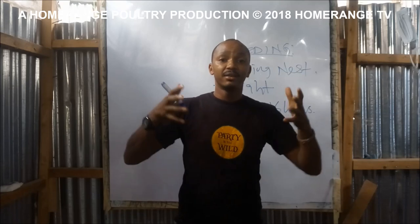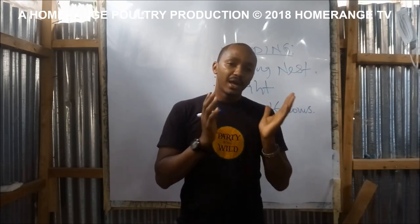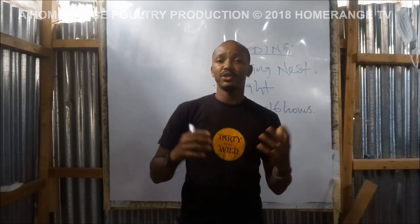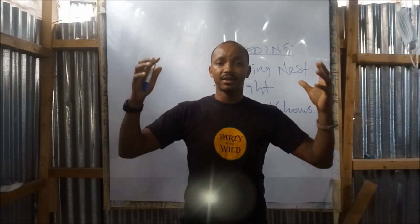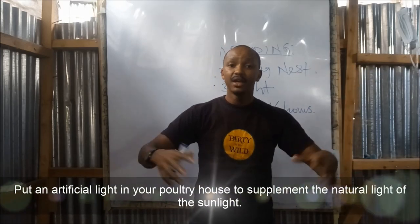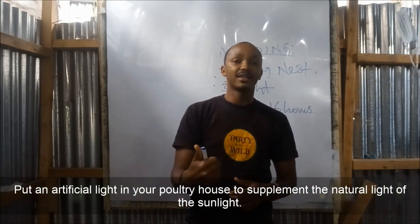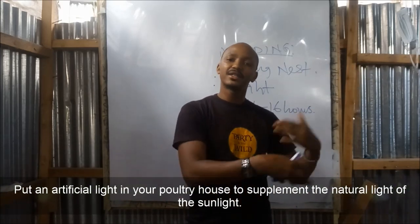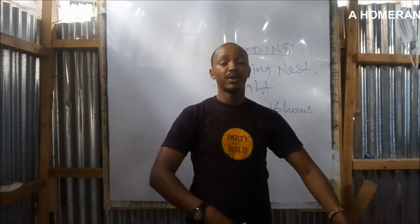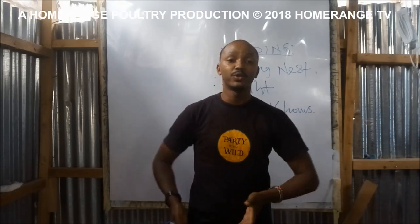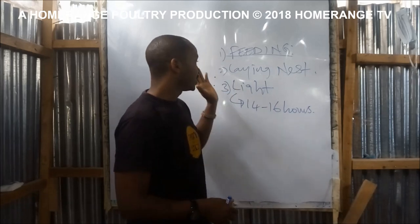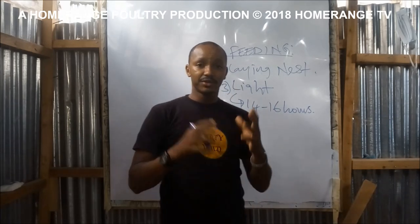What do you often do? Every time from around 4 or 5 pm, when you realize that the weather has started becoming darker, you can just switch on the light inside the house and let it run all the way to around 9 pm, when you can officially switch it off and call it a day. So these three critical factors we've discussed today to do with egg laying are very important for you to always look out for to make sure that you're getting optimum production from your chicken.